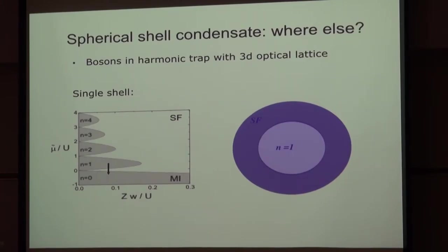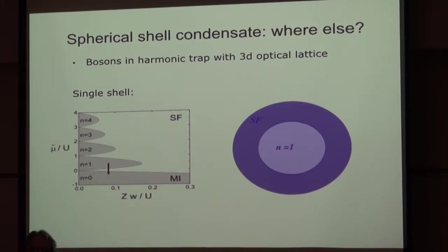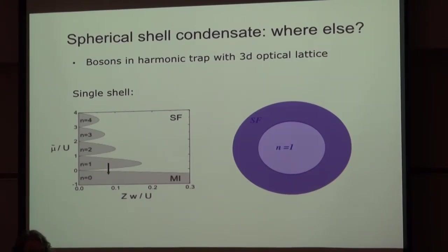So you would start with your typical harmonically-trapped spherical thing, make a Mott, have this superfluid layer, and then study it. But I was actually thinking of two different experiments: I'll just study the shell with no optical lattice whatsoever, just so that I understand the superfluid in a shell-shaped geometry, and then I'll bring that over to the optical lattice. I didn't think this would actually serve to motivate anyone, but if it does, that's awesome.